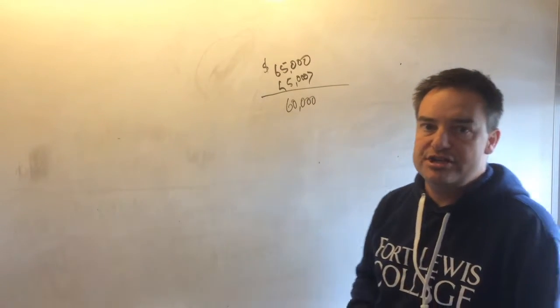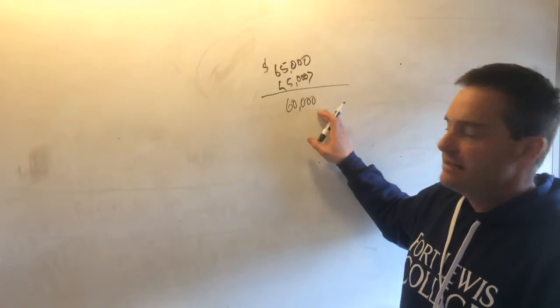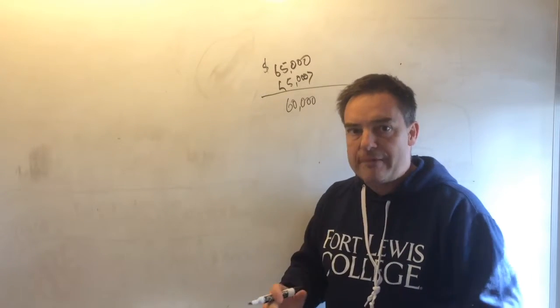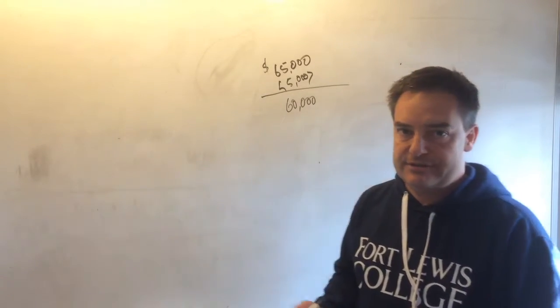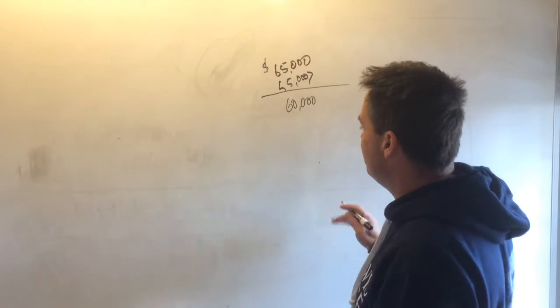Like straight line depreciation, when you're doing units of activity method, as soon as you hit that number, in this case $60,000, you stop depreciating. It's deemed fully depreciated and you don't have to do that journal entry anymore for the depreciation.